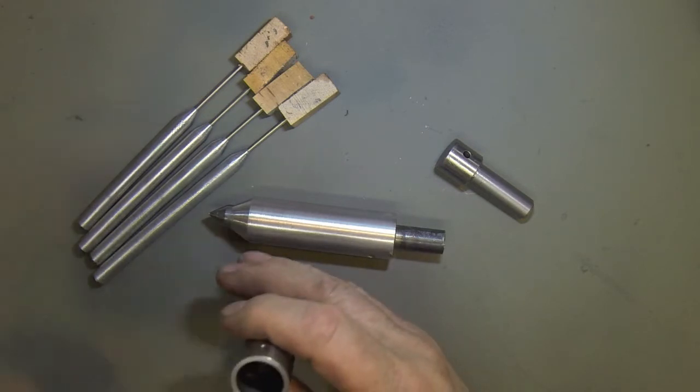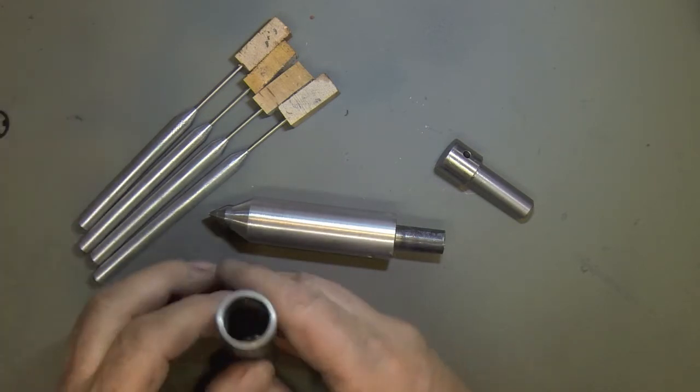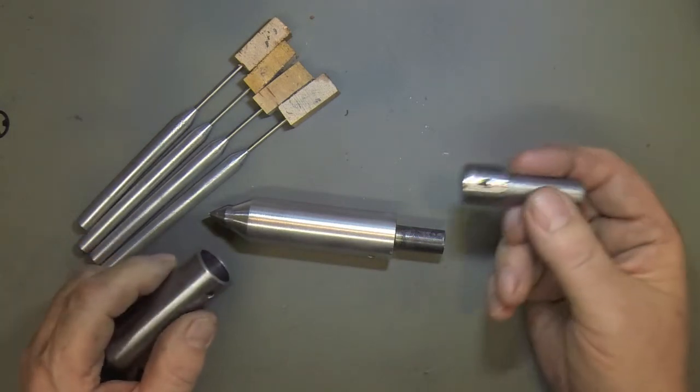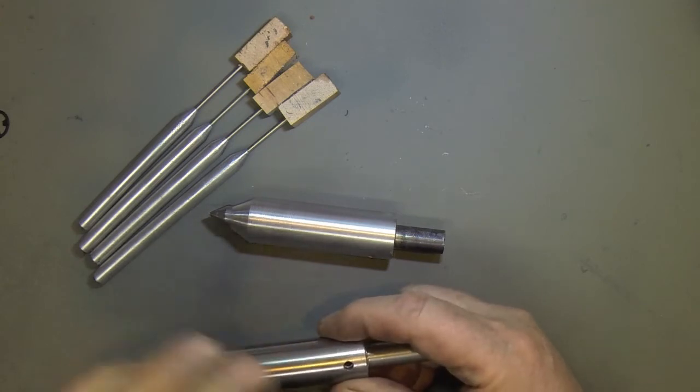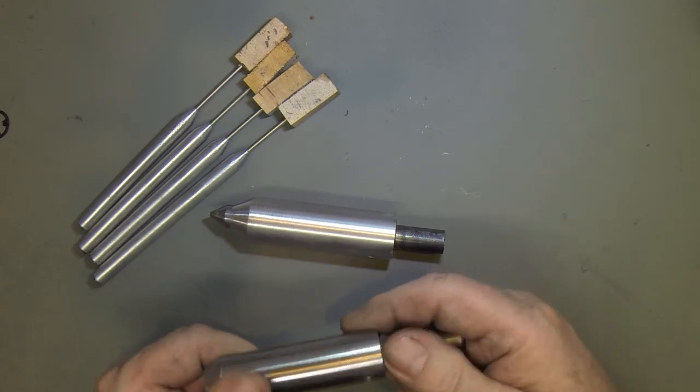The e-clip rests against the bottom end of this. This goes in and compresses the spring and you drive a pin in to hold it.